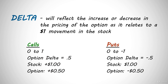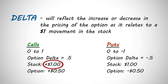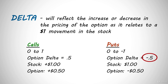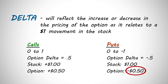The delta will have a value anywhere from 0 to 1 for calls and 0 to negative 1 for puts. So if the option has a delta of 0.5 and the stock goes up $1, then the option will go up by $0.50. If the option had a delta of negative 0.5 and the stock goes up $1, then the option will go down by $0.50.